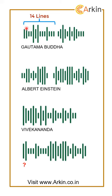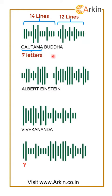If we count these lines, we find that there are 14 lines here and 12 lines there. If we count the letters, we find 7 letters and 6 letters. So we can clearly see the number of lines is double the number of letters: 7 letters → 14 lines, 6 letters → 12 lines.